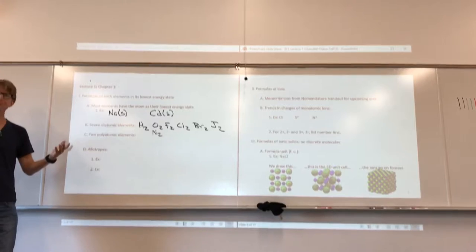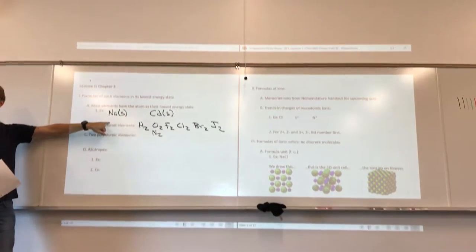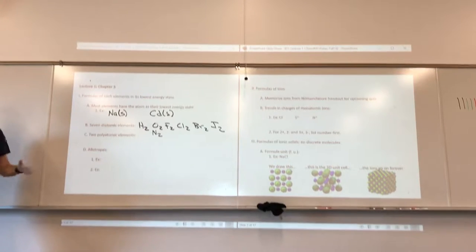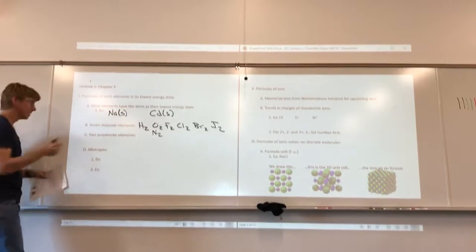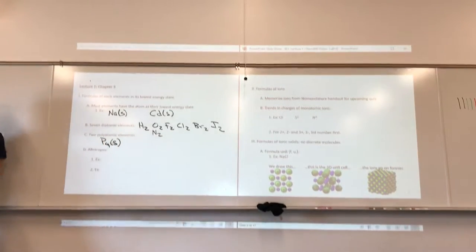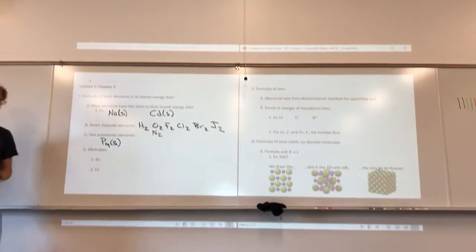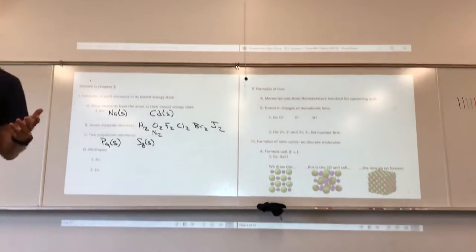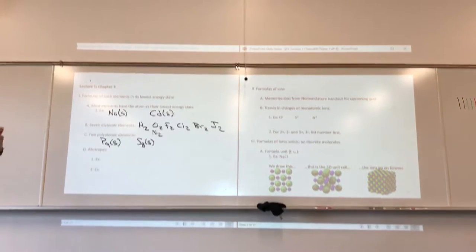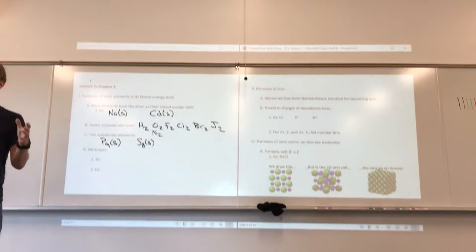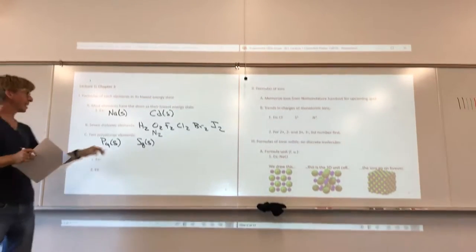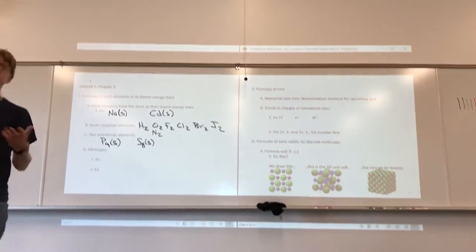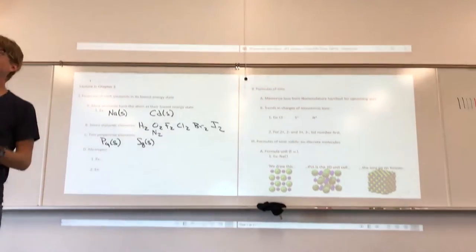Two polyatomic elements — you do have to know that all the elements are atoms except the seven diatomic elements. There are two polyatomics, and if these ever come up, you don't have to memorize them — I would tell you their formulas. Phosphorus tends to be in its lowest energy form P4, and sulfur tends to be S8. Although there are other phases and states of sulfur as well, this is the lowest energy one.